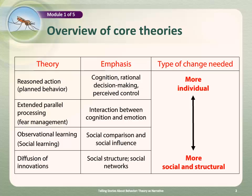Observational learning, or social learning, focuses on how people learn to behave by observing other people and comparing those other people to their own personal situation. And finally, the diffusion of innovations, which in some ways is the most social of these theories, focuses on the structure of the social environment — for example, on neighborhoods and networks — and how these influence access to information and the behavioral response to that information.